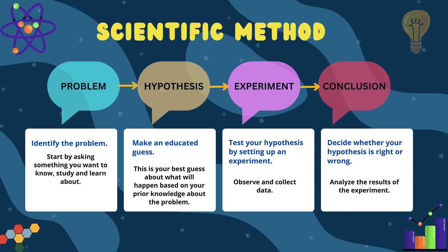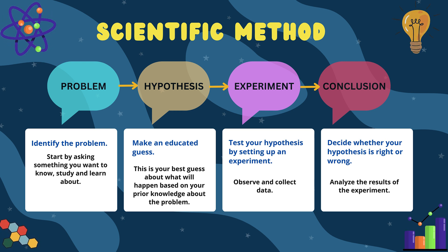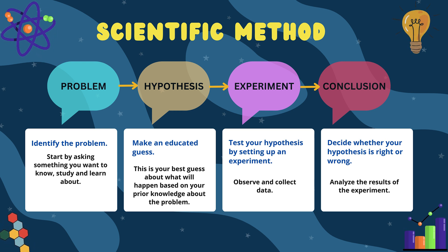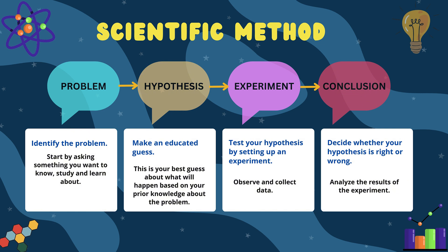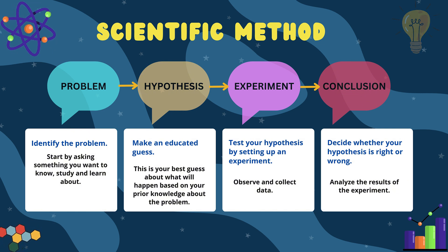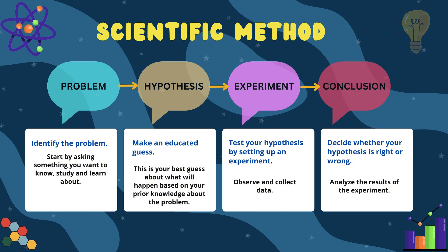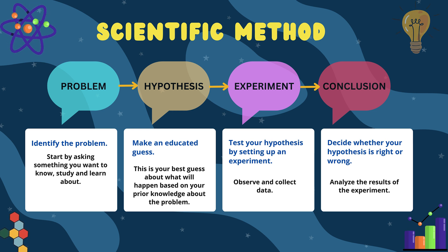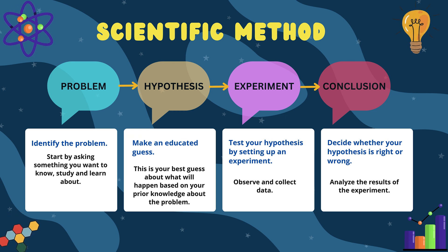Lastly, conclusion. A conclusion is made by analyzing the results of the experiment. It's a statement about whether your hypothesis is right or wrong. If the plant with salt water didn't grow well, you can conclude that salt water is not good for the plant.